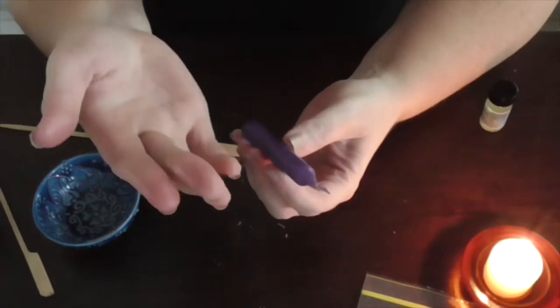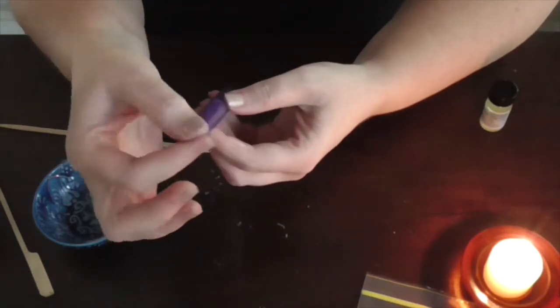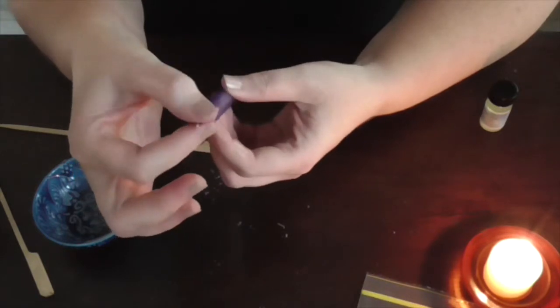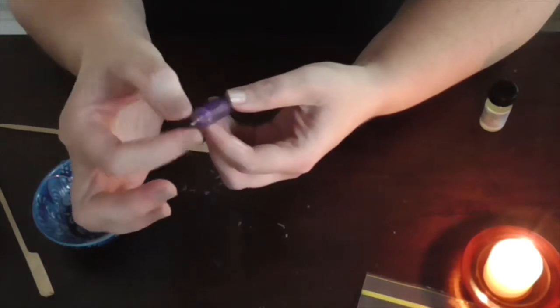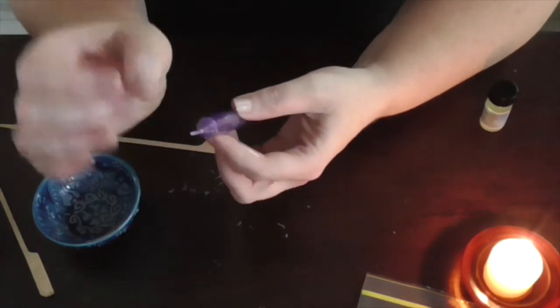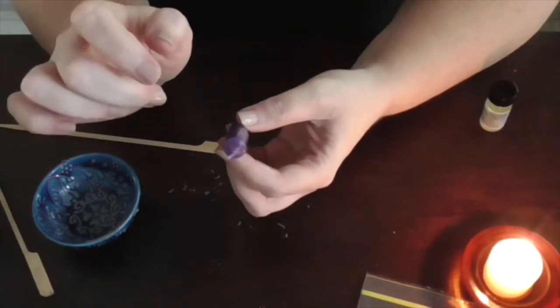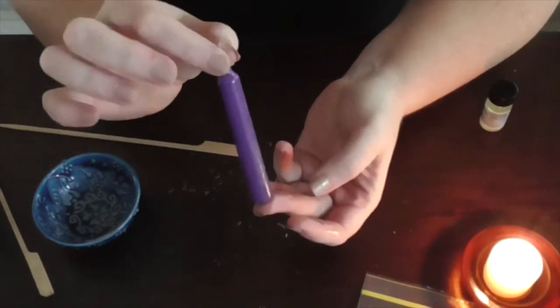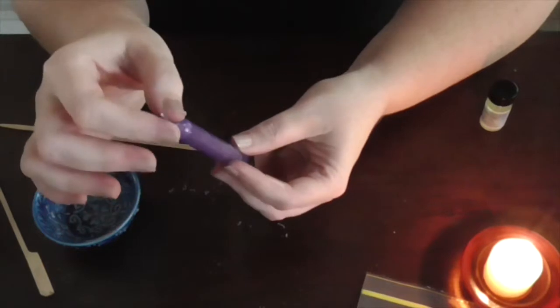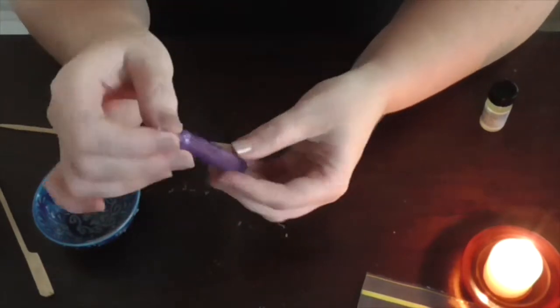And then with the oil that's still on your finger, you can just twist the wick. As I said, that will help with lighting the candle, but it's a way of sealing that energy in so it doesn't leak out when you don't want it to.